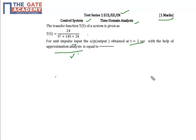So what is approximate analysis? First, look at the transfer function: 24 upon s squared plus 14s plus 24. We can easily find the roots - it will be (s+2) times (s+12). In approximate analysis, first we convert the transfer function into time constant form.